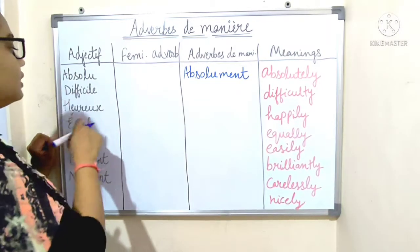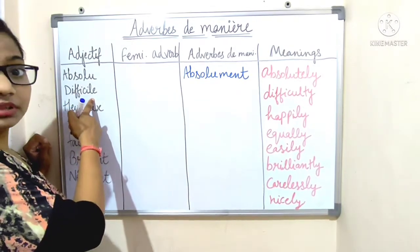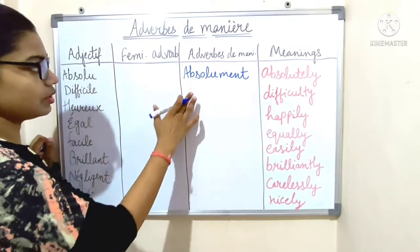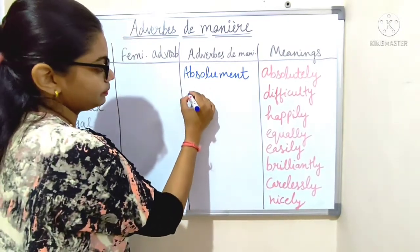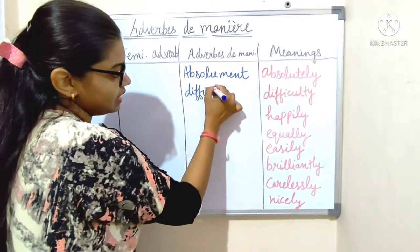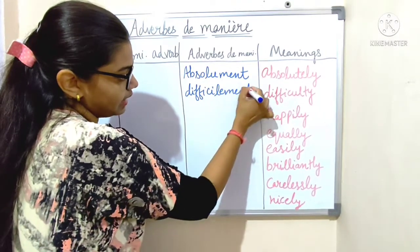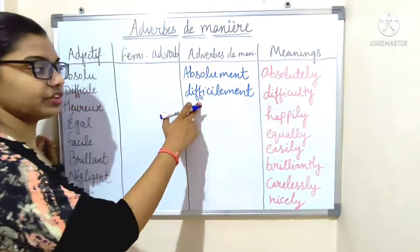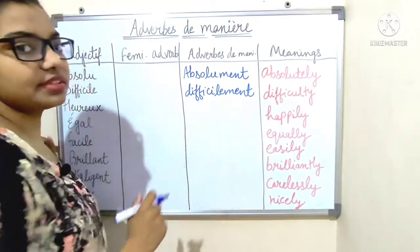Next: 'difficile' — this also ends with the vowel E, so we directly add '-ment': 'difficilement', which means 'with difficulty'.